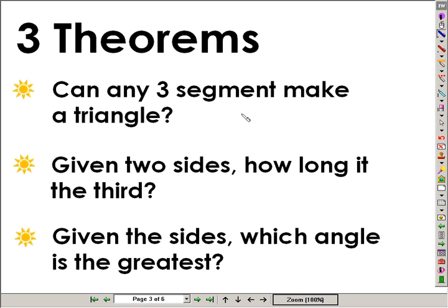Can any three segments make a triangle? Given two sides of a triangle, how long will the third side be? And finally, given the sides, which angle is the greatest? Or seeing this in reverse, given all the angles, which side would be the longest?